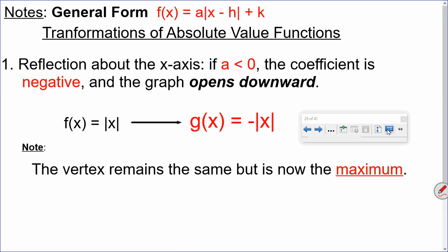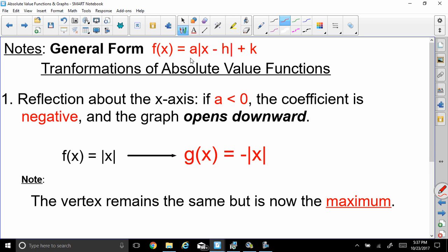The general form is f of x equals a times absolute value of x minus h, plus k. There are a few things to know about the transformation of absolute value functions. A reflection about the x-axis occurs when a is less than 0 — the coefficient is negative, and the graph opens downwards as shown. The vertex remains the same, but now it's a maximum.